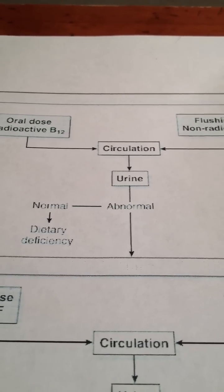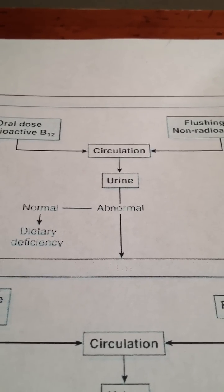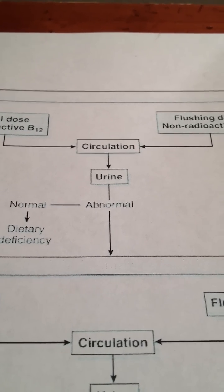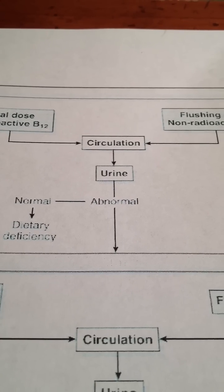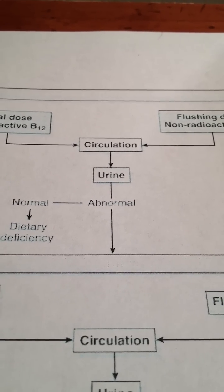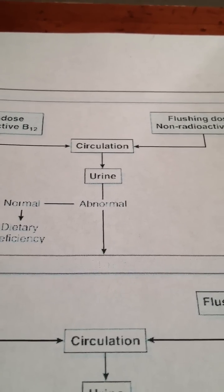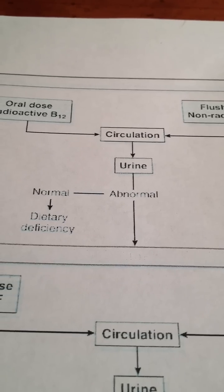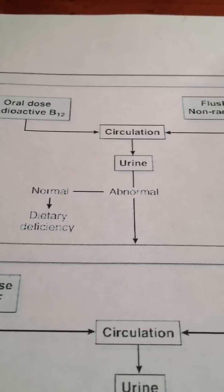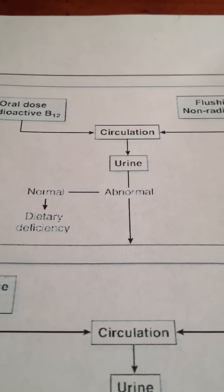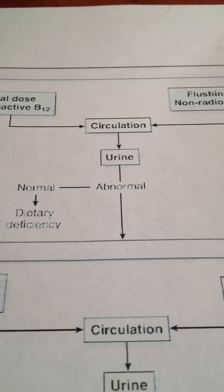We wait about 24 hours and we test the urine. In normal absorption, 5-35% of that radioactive labeled B12 is excreted in the urine. When that happens, we know that the only problem we have here is actual B12 — that's a dietary deficiency.